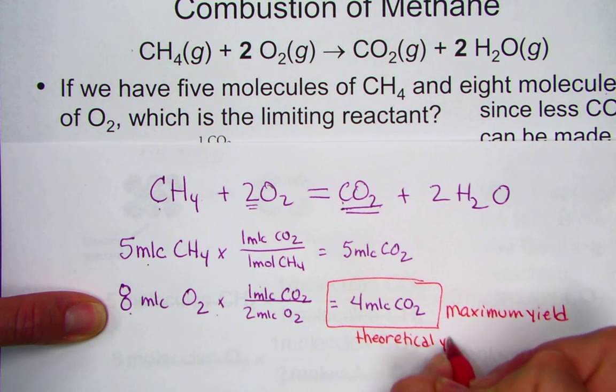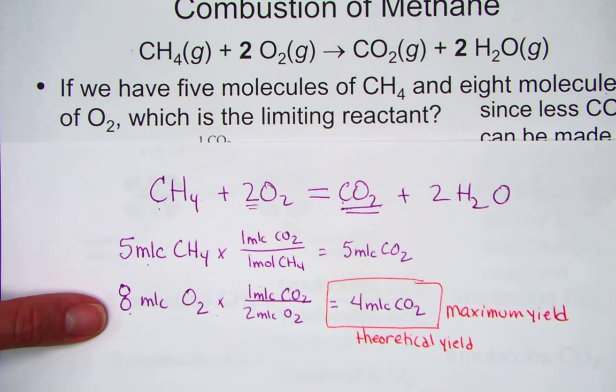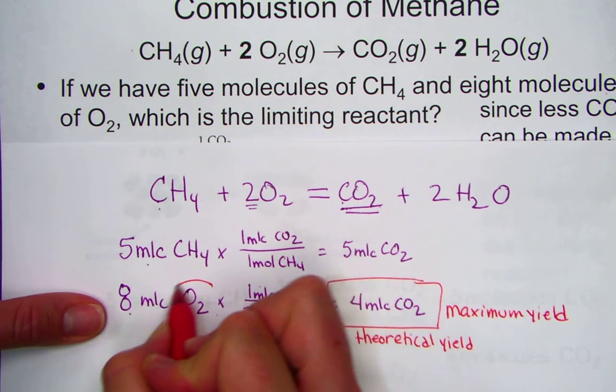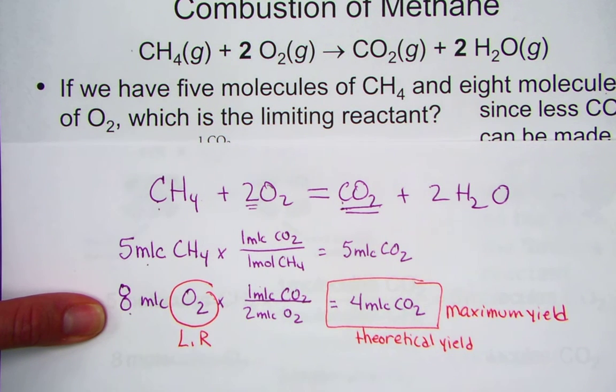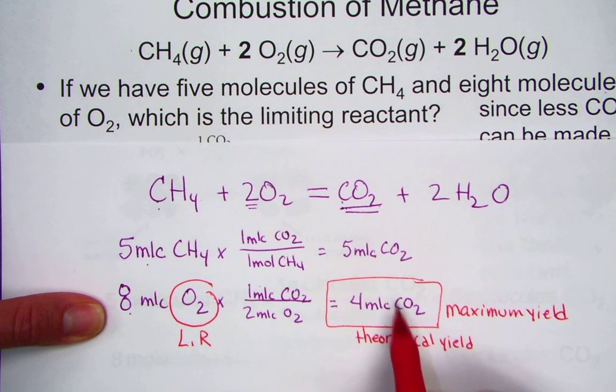When reactants collide, they break their bonds and atoms rearrange to form the products. I have the same number of atoms from the left to right side. I am obeying the law of conservation of mass. But what I've done is just rearrange their order.